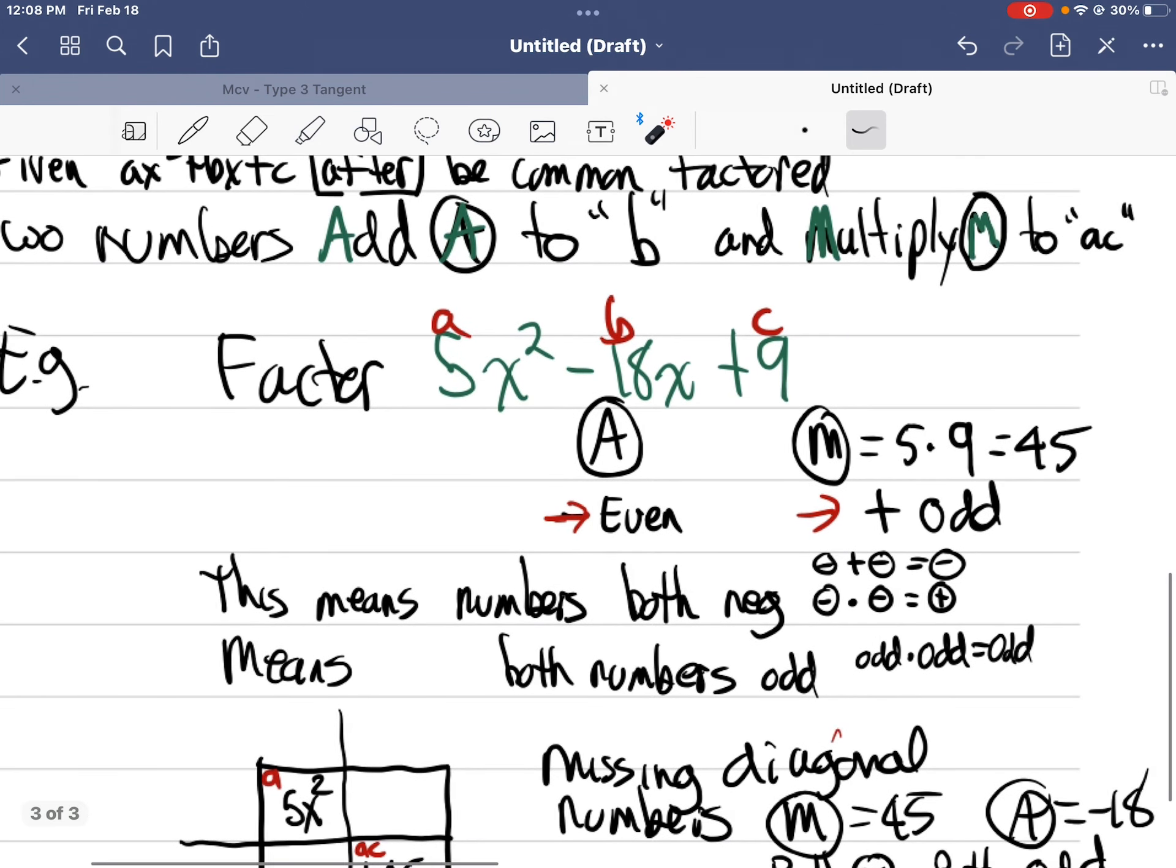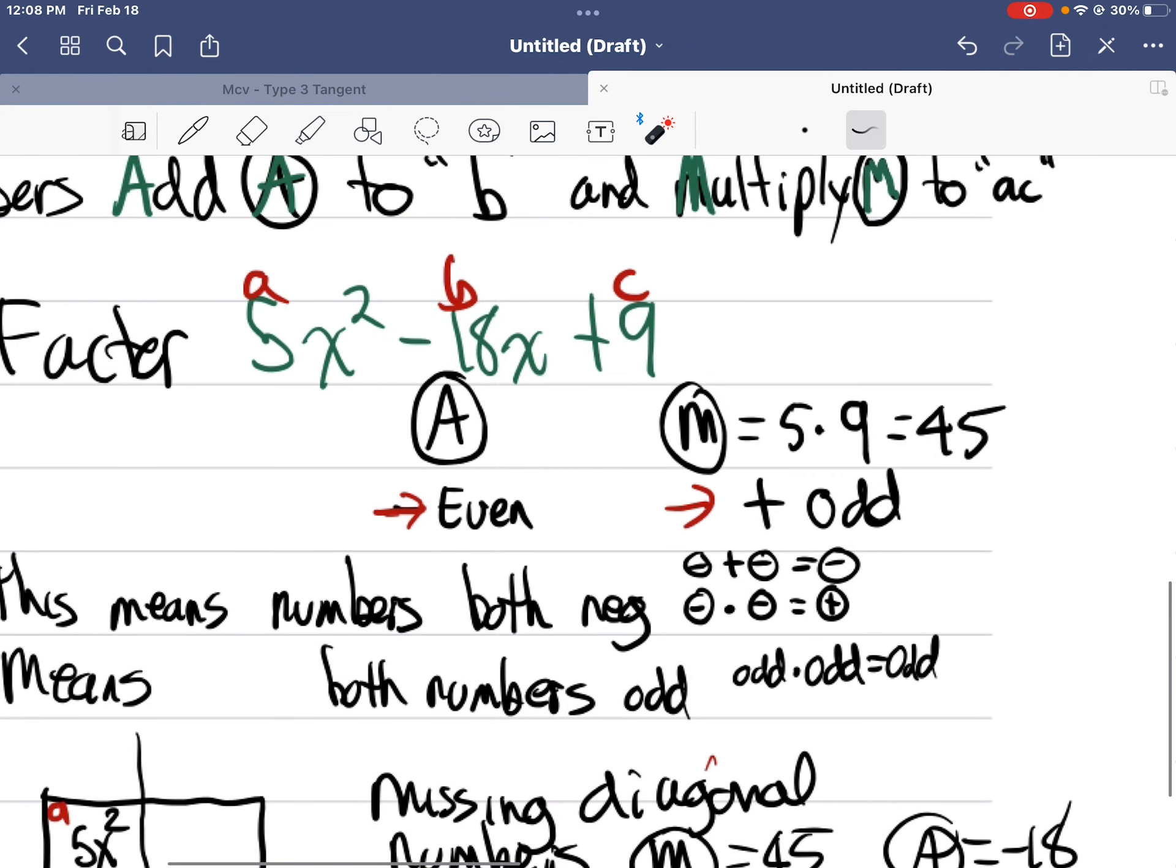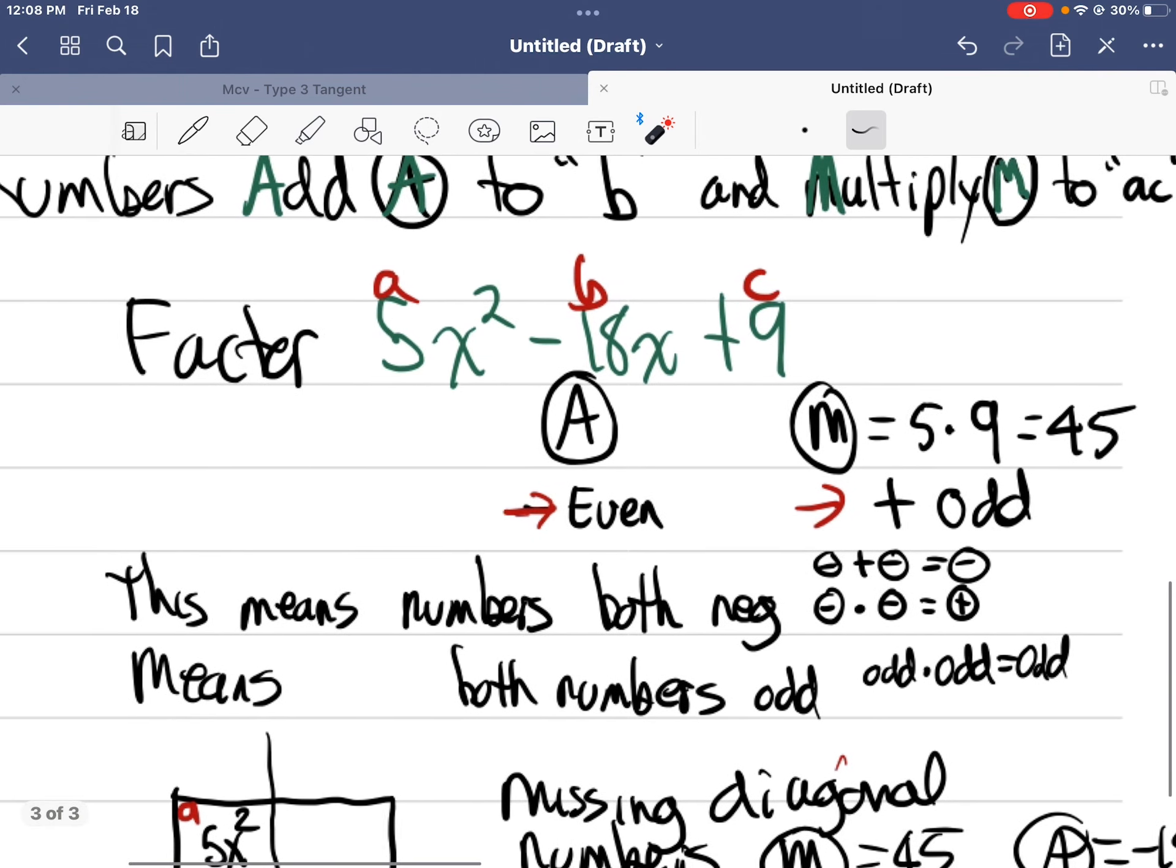Okay, so let's go through an example. 5x squared minus 18x plus 9. Remember what factoring is. I'm trying to take something that's a sum or a difference and represent it with a product, right? So the process of factoring involves division. In order to do division, I probably have to understand multiplication. So how do I go about this?